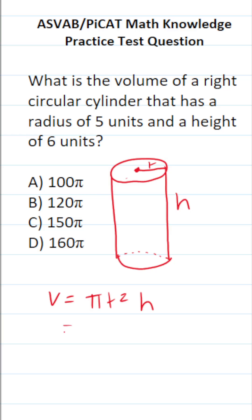So all we have to do is identify these values from the problem and plug them in accordingly. We know this radius, r, is five and its height is six. So let's plug this in accordingly.